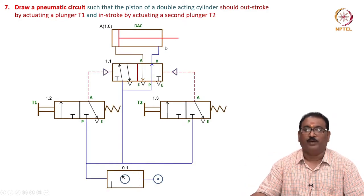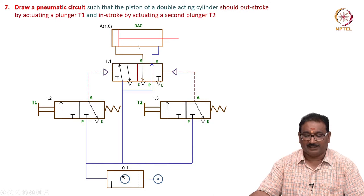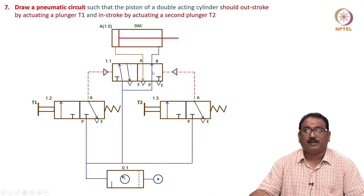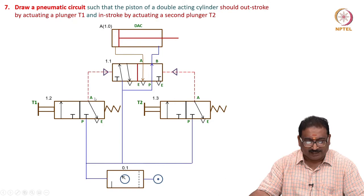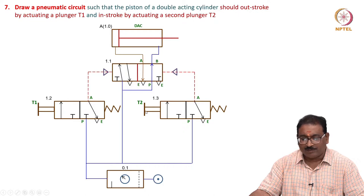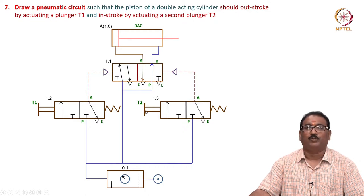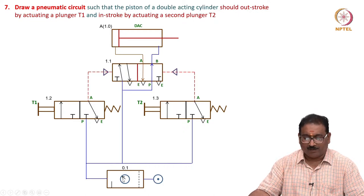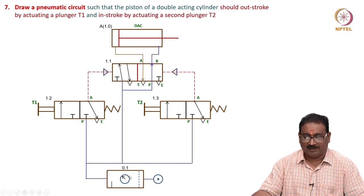You will see now, very simple. Double-acting cylinder with the pilot-operated valve - here I am connecting to 3/2 T1 and 3/2 T2 push button activations. Then all same. It is a FRL unit power source.